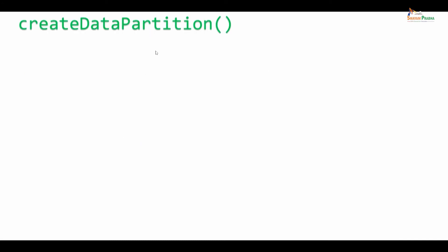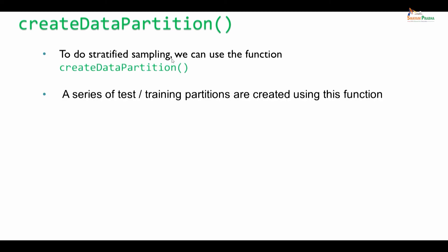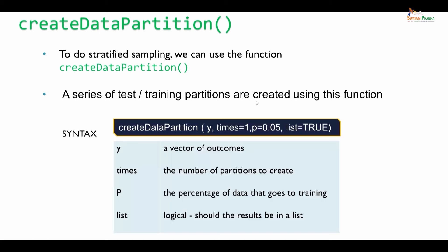Let us see how to do stratified sampling using R. To do stratified sampling we can use the function `createDataPartition`. By doing `createDataPartition`, a series of test or training partitions are created. The syntax: `y` is the vector of outcomes; `times = 1` is the number of partitions to create; `p = 0.05` is the percentage of data for the training set; and `list = TRUE` indicates whether the result should be in list format.